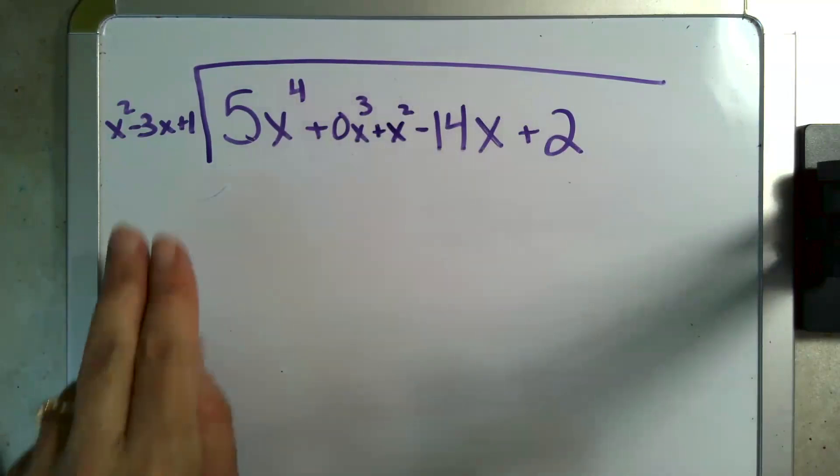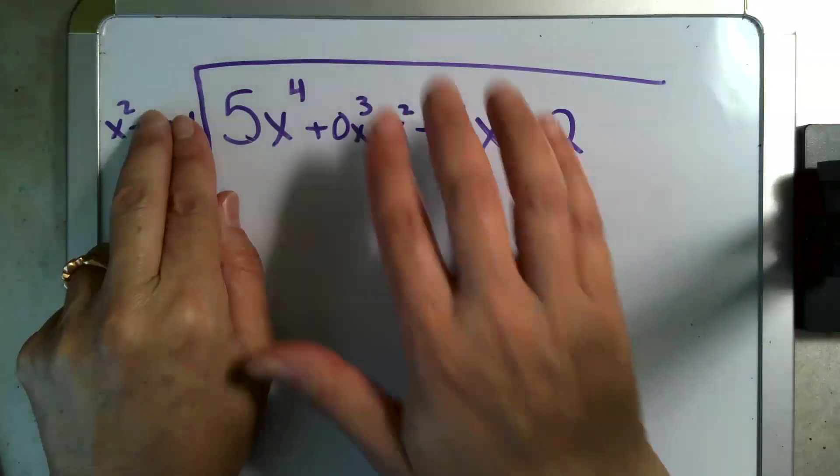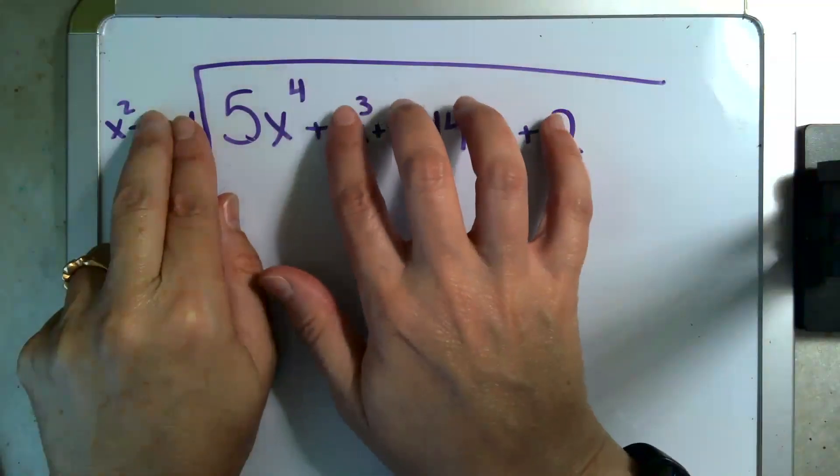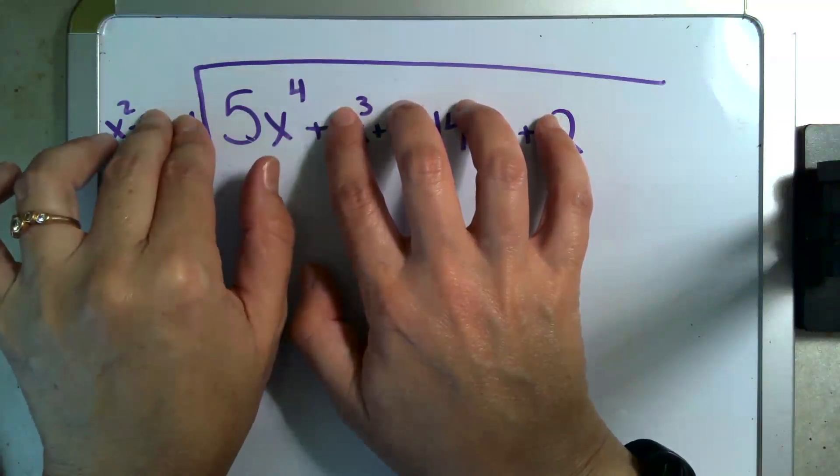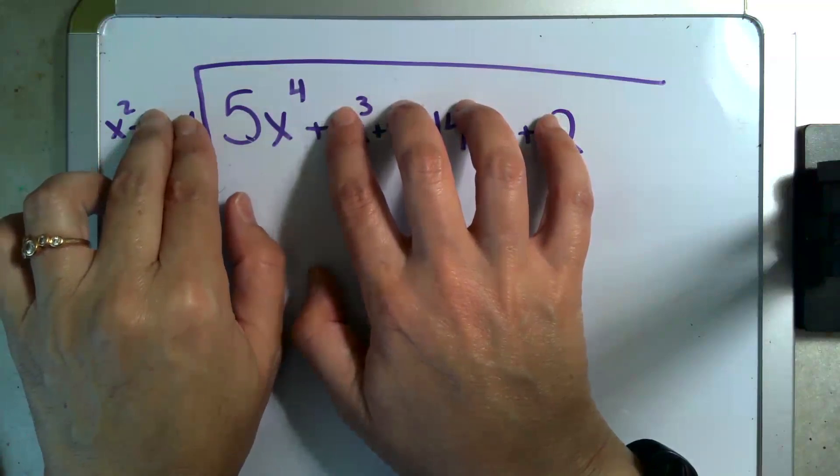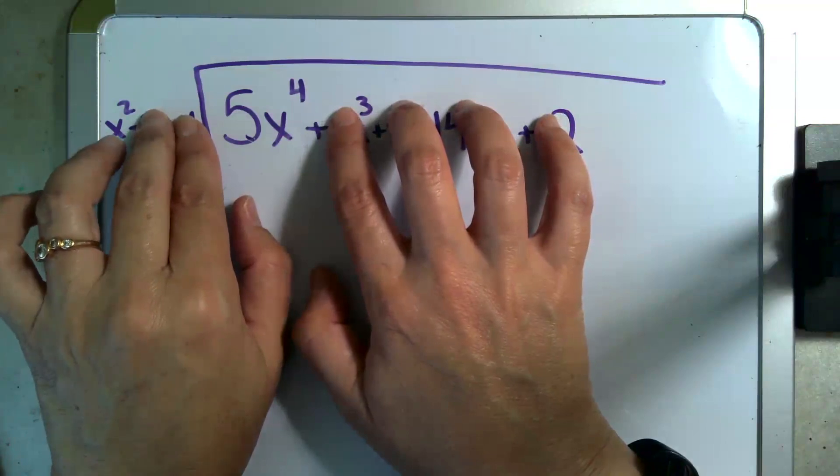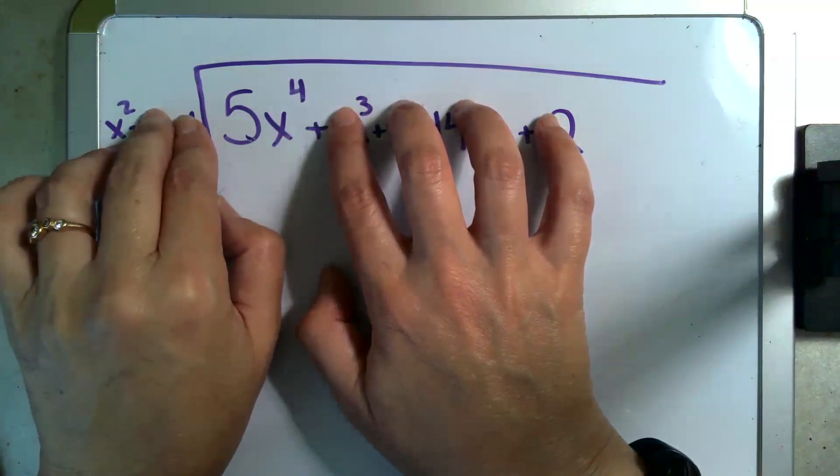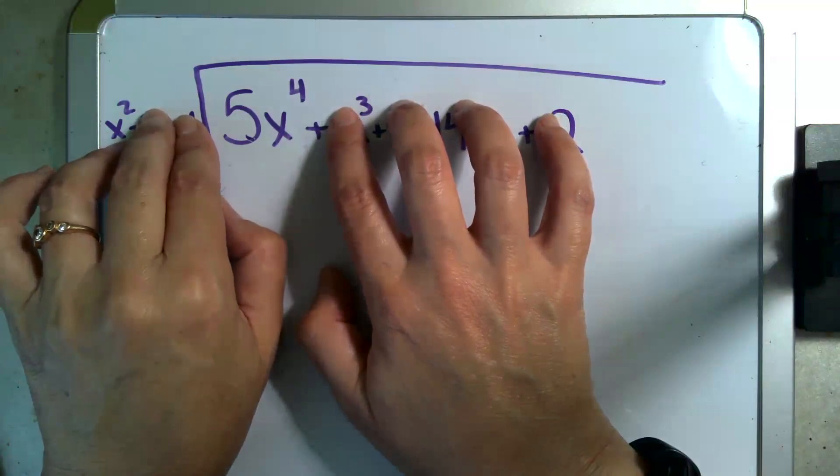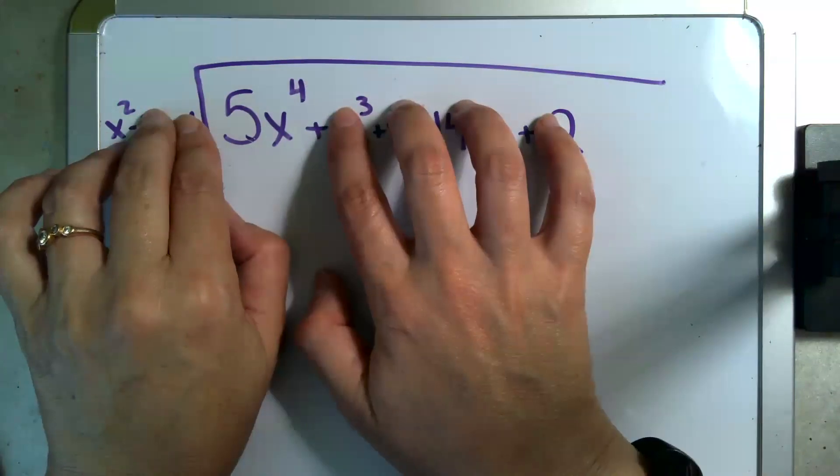The first thing I'm going to do is cover up this stuff and cover up this stuff and ask myself x squared divides into 5x to the fourth how many times, or another way to think of it if you prefer multiplication, what times x squared gets me 5x to the fourth. Well the x squared has no coefficient so I need to multiply a 5 and then I also need to multiply an x squared into that x squared to make it an x to the fourth.